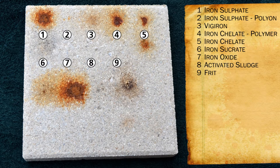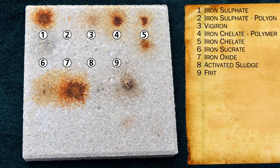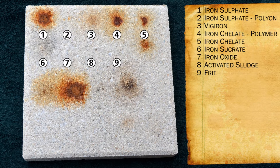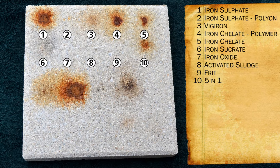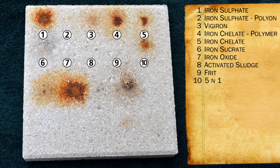Very little of the sucrate or oxide material is ever going to be available to the plant. Number eight, the sewage sludge, has a very low amount of iron in it, but there's no staining — it's a decent material to use, just keep in mind the small amount of the element present when determining application rates. Frit is a combination of different elements that are all oxidized and we see no staining from that. Number nine — the five-in-one — combines sulfate, chelate, sucrate, organic material, and all five iron forms in one. We see a little bit of staining from it, but not nearly as bad as the sulfate.